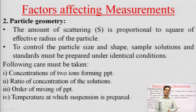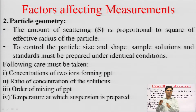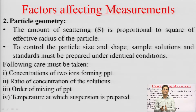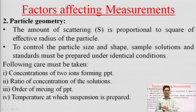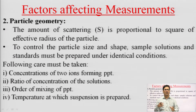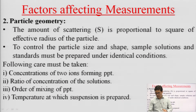The second important factor is particle geometry. The amount of scattering is proportional to the square of the radius of the particle. As the radius increases, more scattering and losses are observed. To control particle size and shape, it is recommended to always prepare sample and standard solutions under identical conditions. Important precautions include monitoring the concentration of the two ions forming the precipitate, their concentration ratios, order of mixing of precipitate, and temperature at which the suspension is prepared.